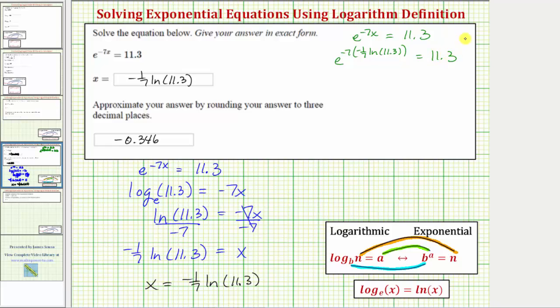Looking at the exponent, notice how we have negative seven times negative one-seventh, which is one. So this would be e raised to the power of natural log of 11.3 equals 11.3.